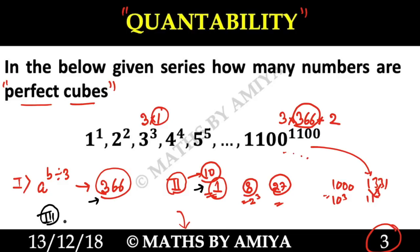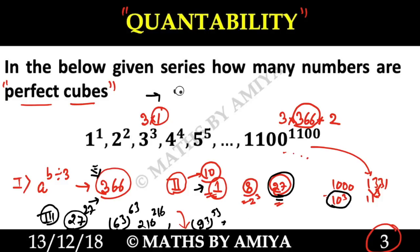Now we want the overlap. How can we find the overlap? For overlap, I have to check all the numbers that are in both cases. I have to check 27 raised to power 27, that's 3 cubed. Then 6 cubed raised to power 6 cubed, that's 216 raised to power 216. Then 9 cubed raised to power 9 cubed. So we have 366 numbers, 10 numbers here, and 3 numbers in the intersection. The answer is 366 plus 10 minus 3, which equals 373.